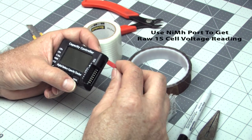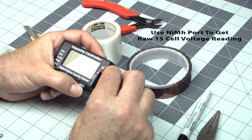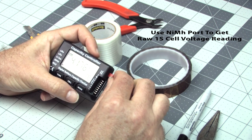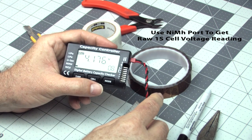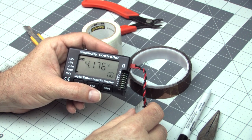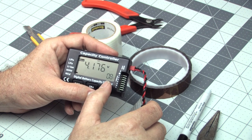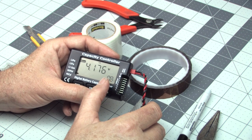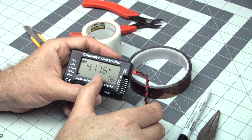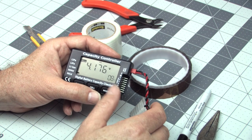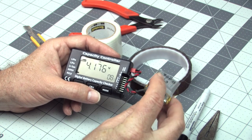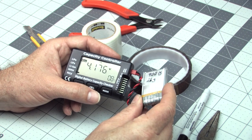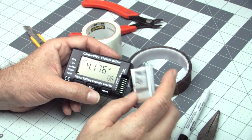You just want to flip the JST connector over upside down. We're going to use the NIMH port. That's just going to give us a raw voltage reading. And you can see it's giving us 4.176 volts. Even though it's saying it's only 80%, we don't care about that because it's looking for a nickel metal hydride pack. But that's going to give us a raw voltage reading here. 4.1, so that means this pack is just about full. If it was 4.2 it would be completely full. So we're at about 80% of this pack just reading the voltage off.